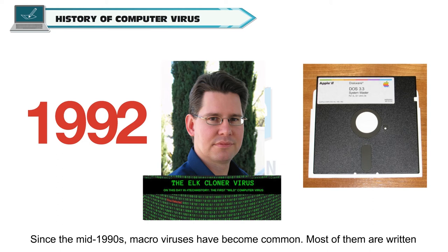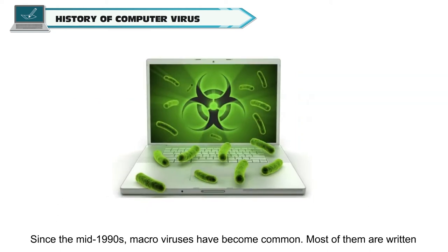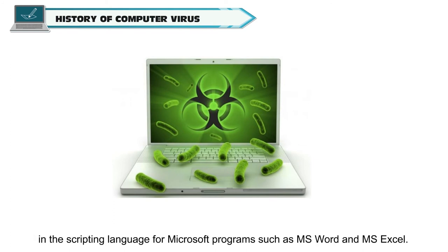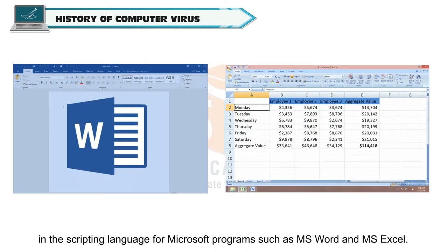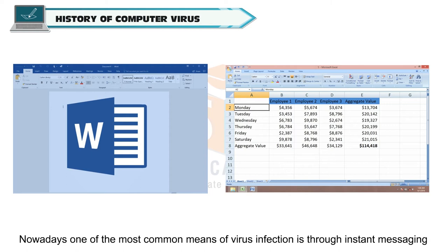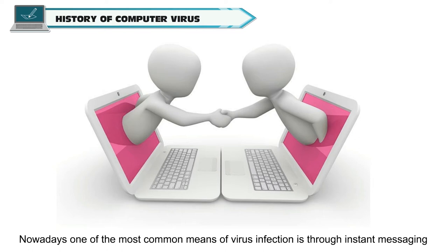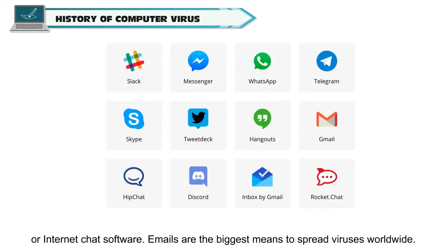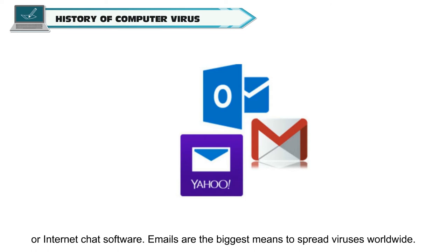Since the mid-1990s, macro viruses have become common. Most of them are written in the scripting language for Microsoft programs such as MS Word and MS Excel. These viruses spread by Excel spreadsheets and other Microsoft Office documents. Nowadays, one of the most common means of virus infection is through instant messaging or internet chat software. Emails are the biggest means to spread viruses worldwide.